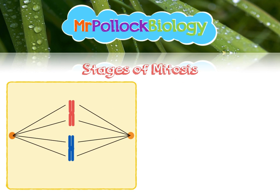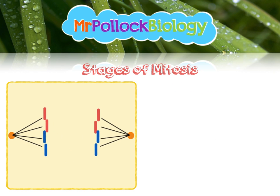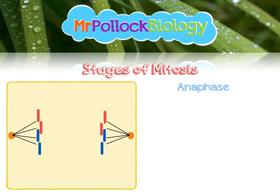The next stage is metaphase, where the chromosomes line up along the centre of the cell — on the equator. We also get the formation of spindle fibres, and their purpose becomes apparent in the next stage, anaphase. In anaphase, those spindle fibres contract and they pull the sister chromatids to opposite ends of the cell. So what was once a chromosome — the two chromatids — gets pulled to opposite ends of the cell.